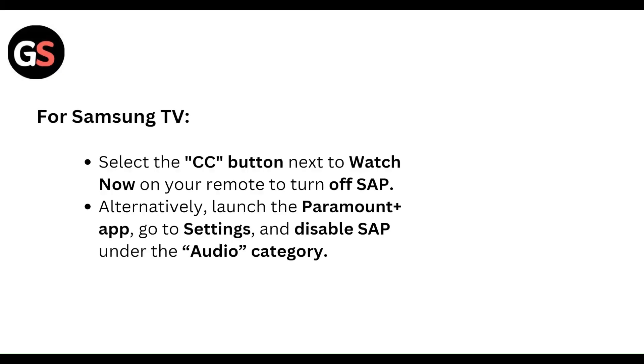For Samsung, select the CC button next to Watch Now on your remote to turn off SAP. Alternatively, launch the Paramount app, go to Settings, and disable SAP under the audio category.